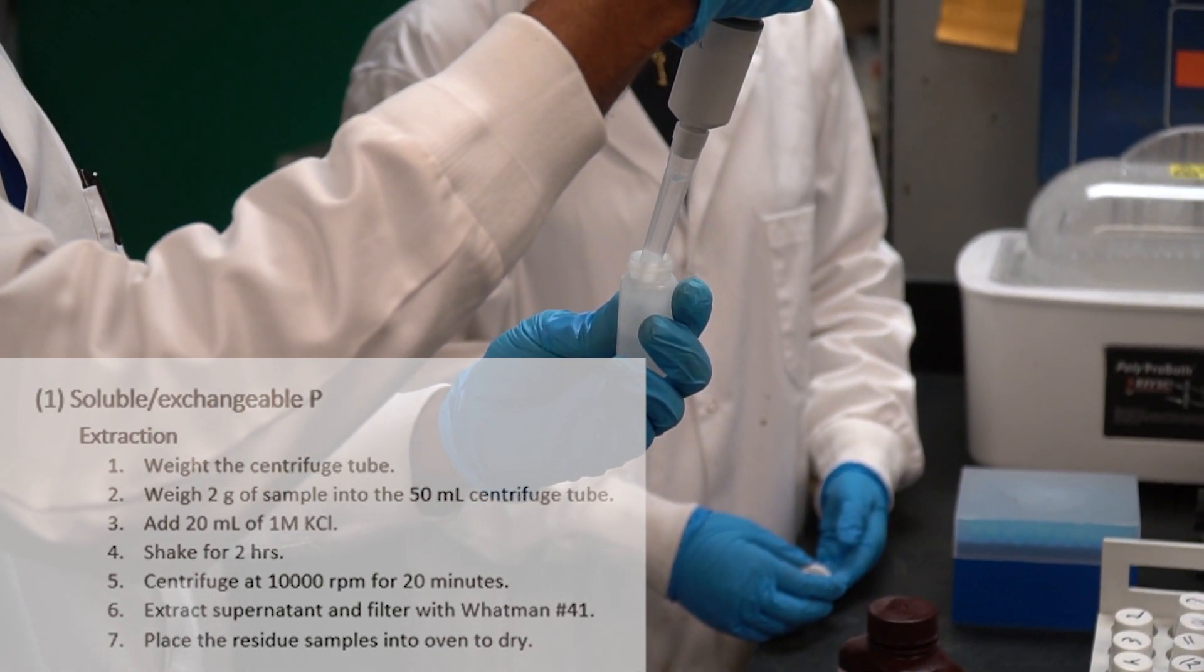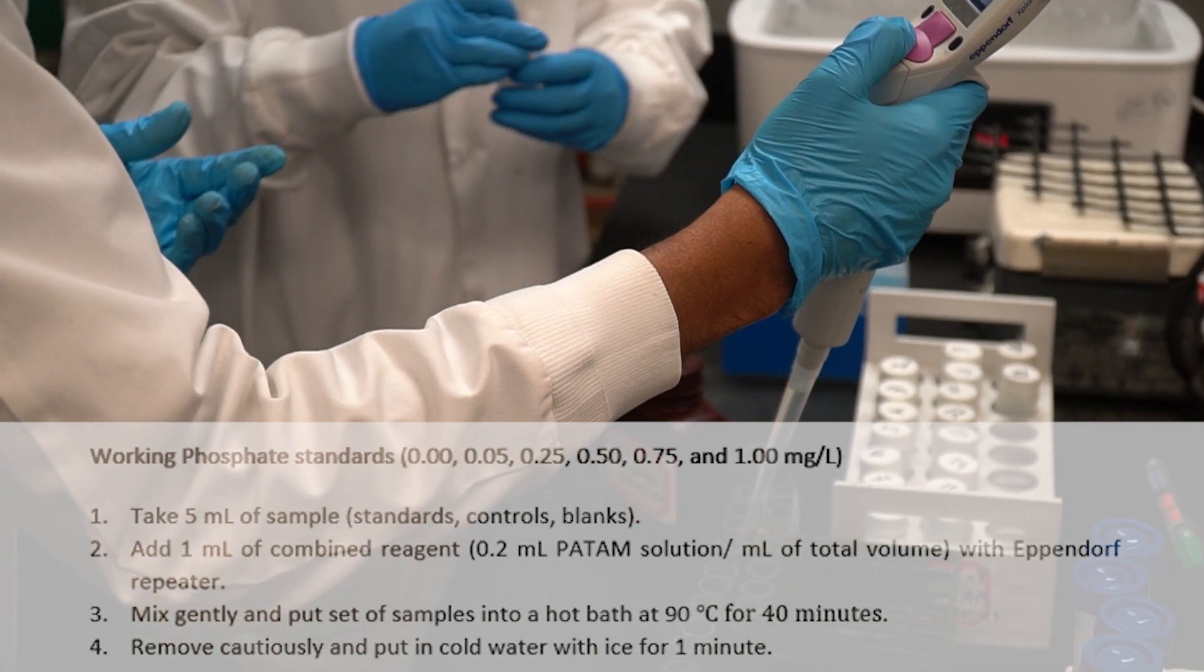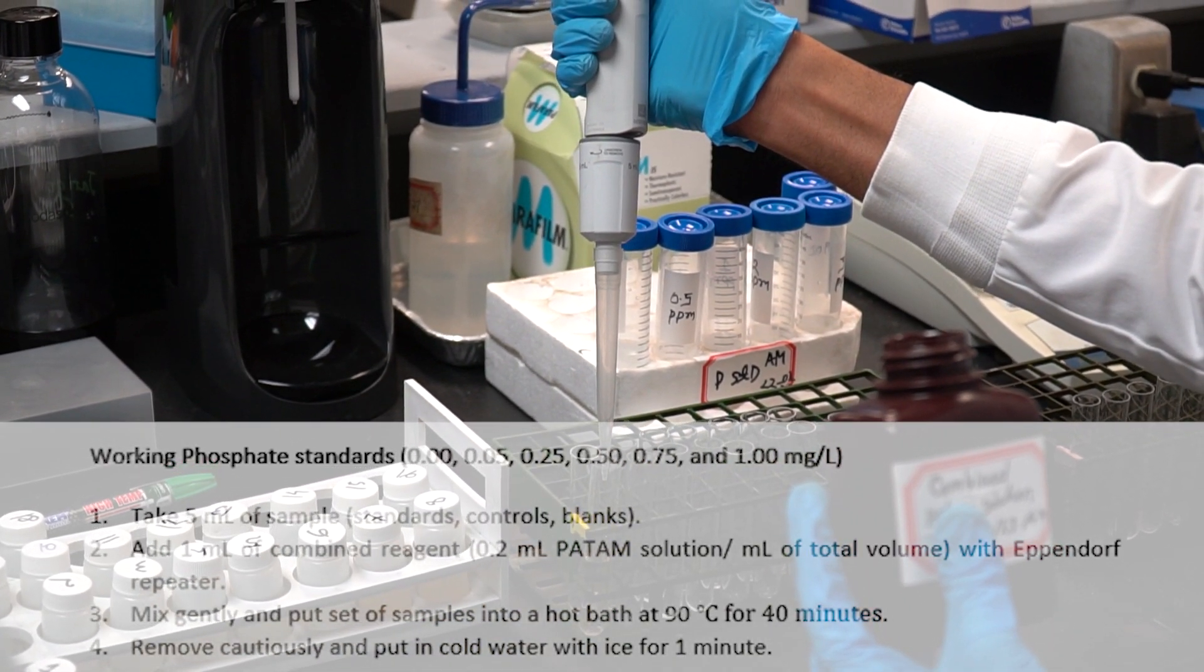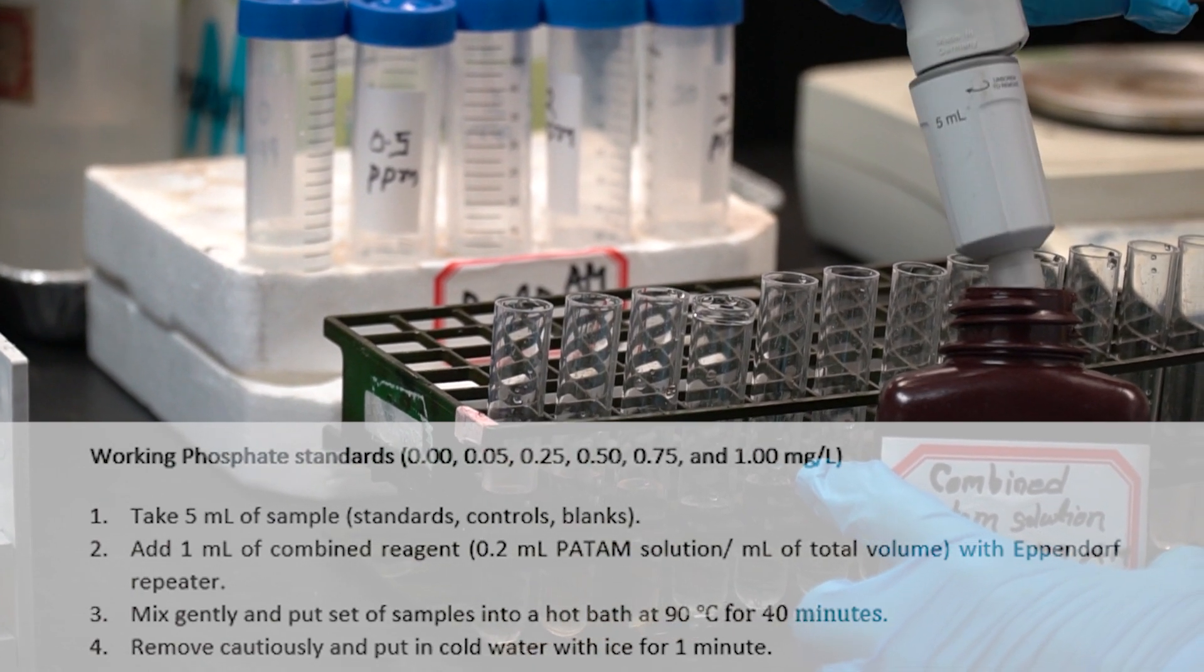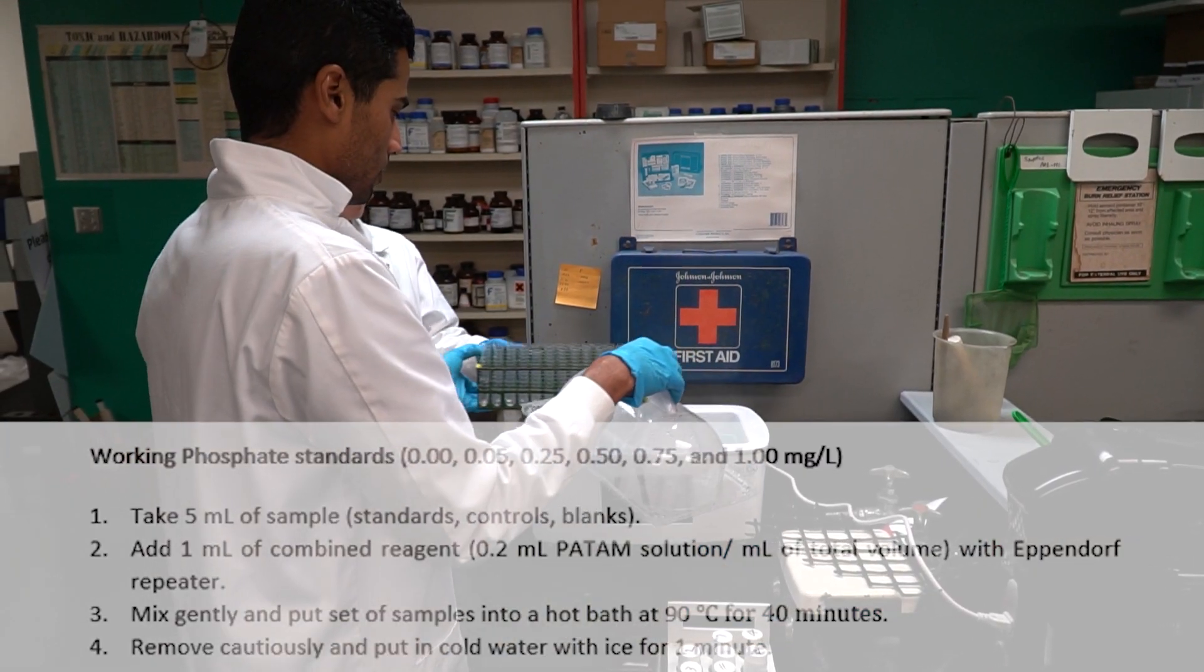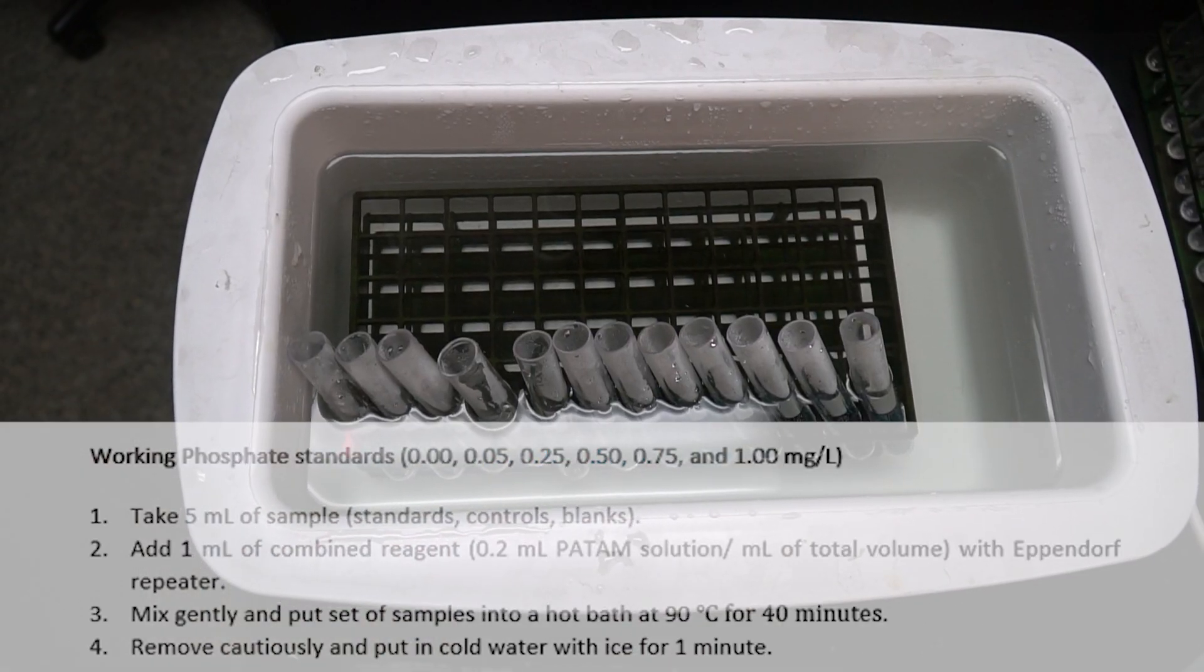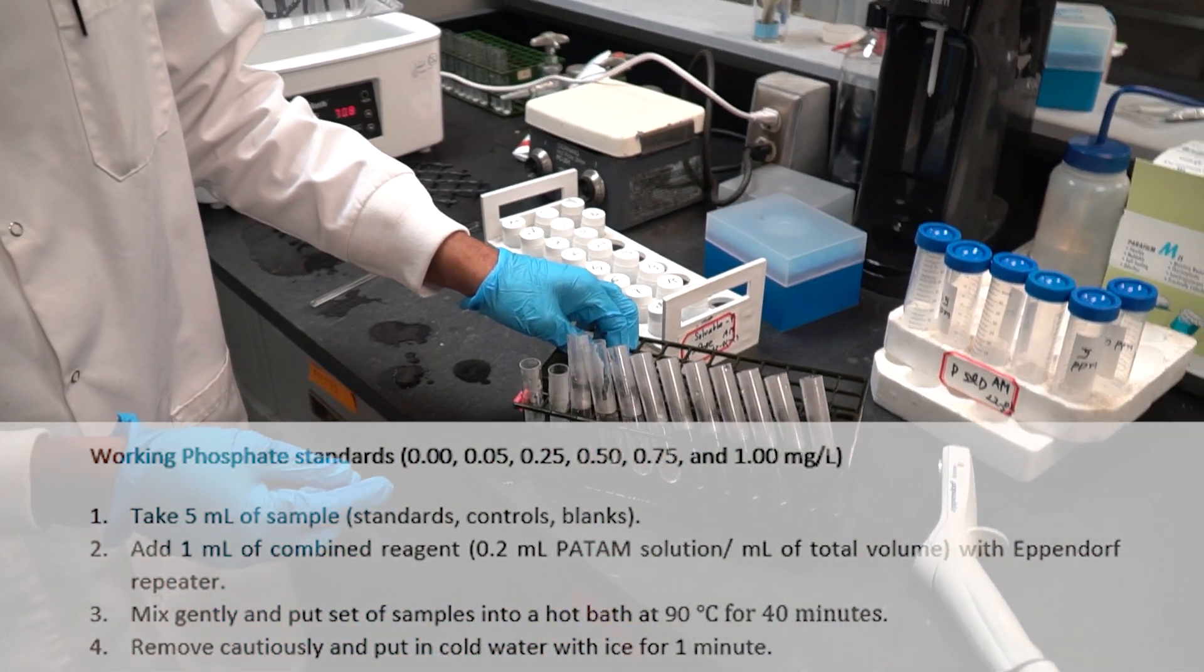To analyze the soluble P, we have to make standards of 0.05, 0.25, 0.5, 0.75 and 1 milligram per liter. This batch of phosphate standards can be changed depending on the samples. After making the standards, we have to take 5 milliliter of samples and standard. Then, we have to add 1 milliliter of combined reagent.